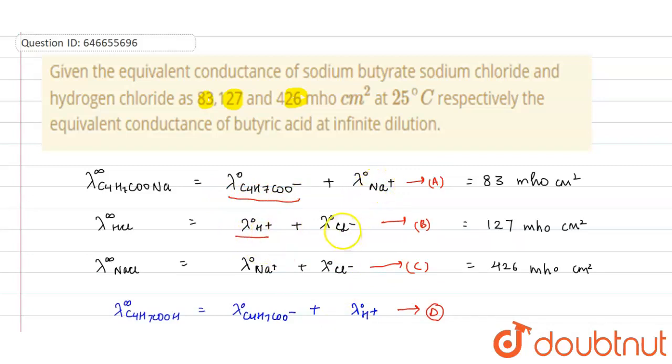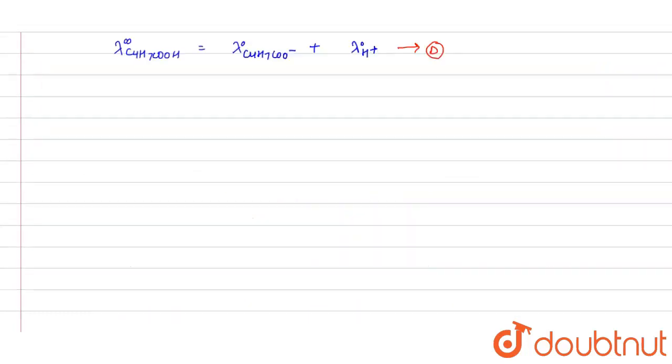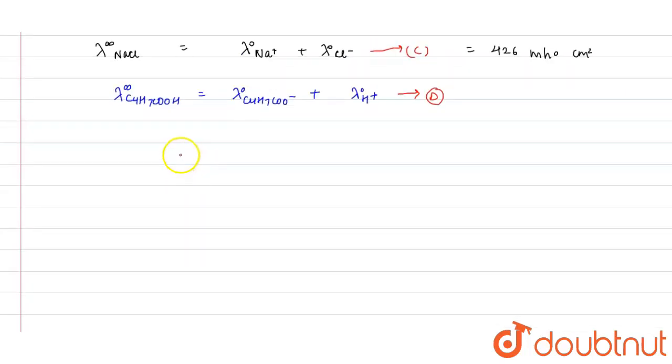We don't need Na plus and Cl minus, so we will eliminate these two terms by subtracting with C. So what we will do is A plus B minus C to get the equation D.